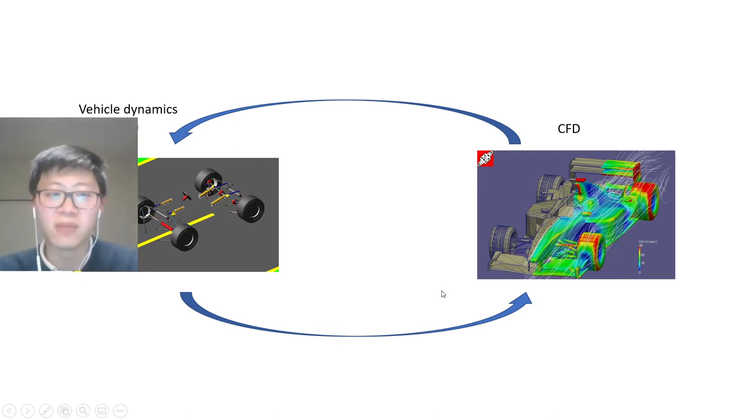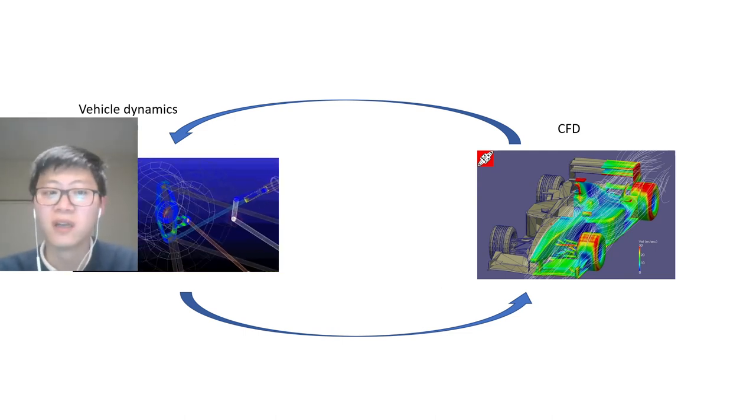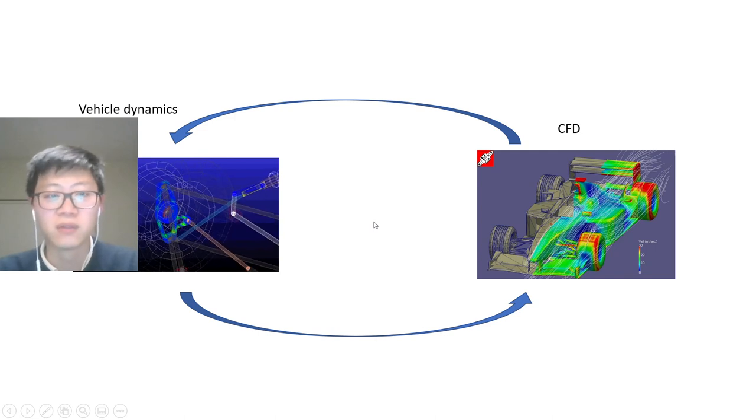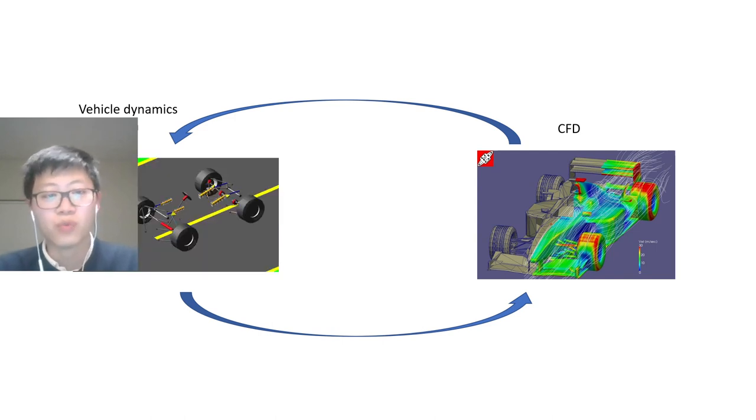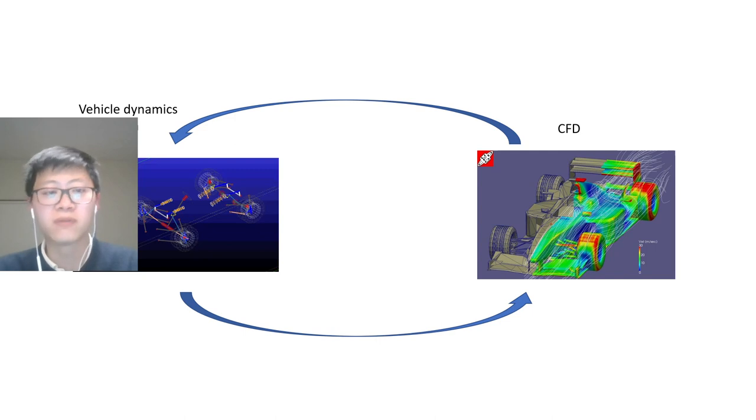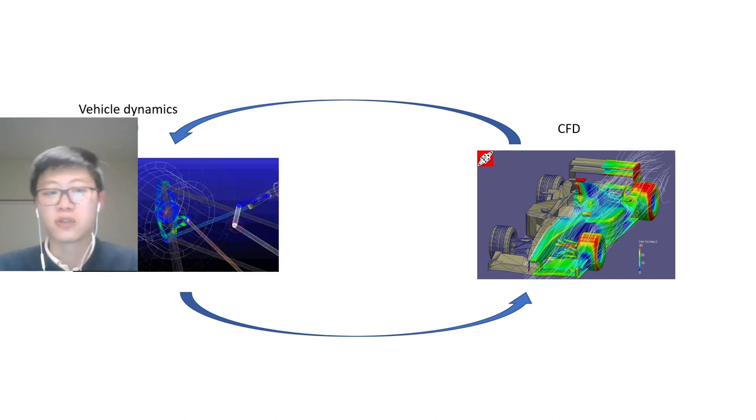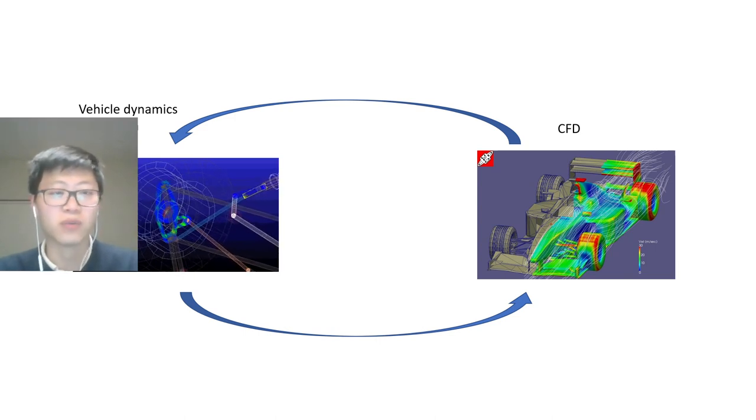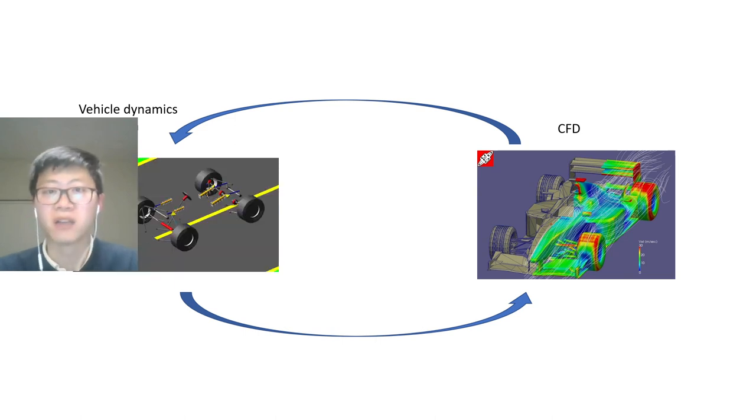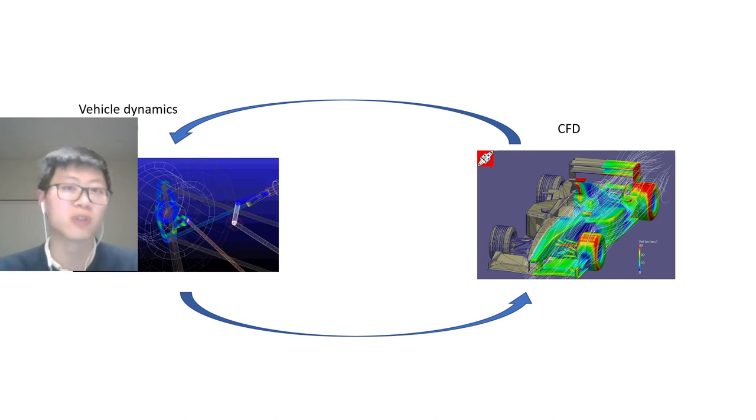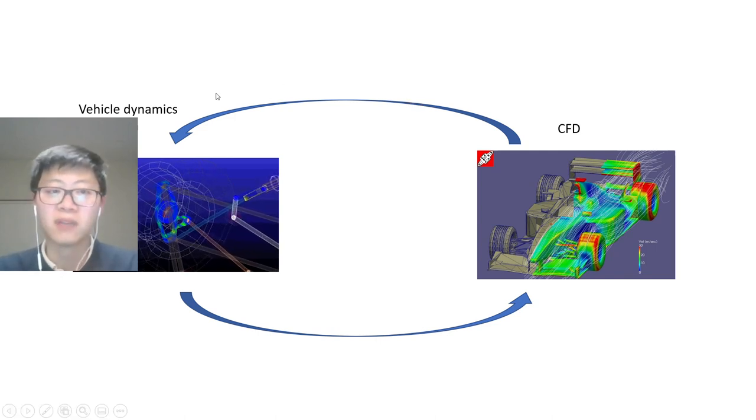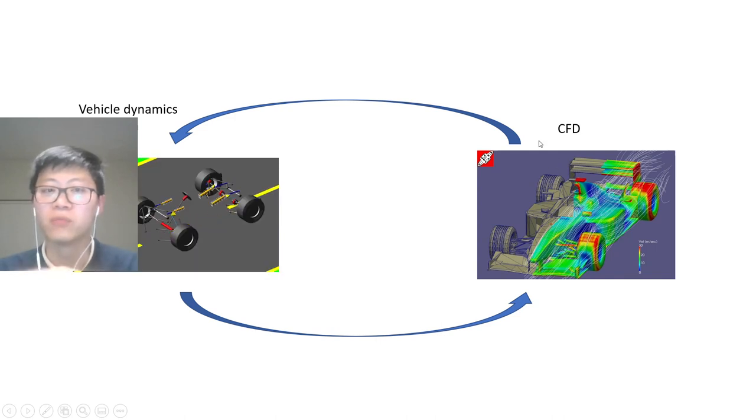Which is probably why the teams were totally caught off guard by this, because it is quite challenging. With some teams suffering more from porpoising than others, there's two possibilities: either they just were lucky and stumbled on a design which by luck doesn't suffer from this porpoising problem as much, or maybe some of the teams which don't suffer from the problem might have done some simulations like this to prevent the problem from happening.